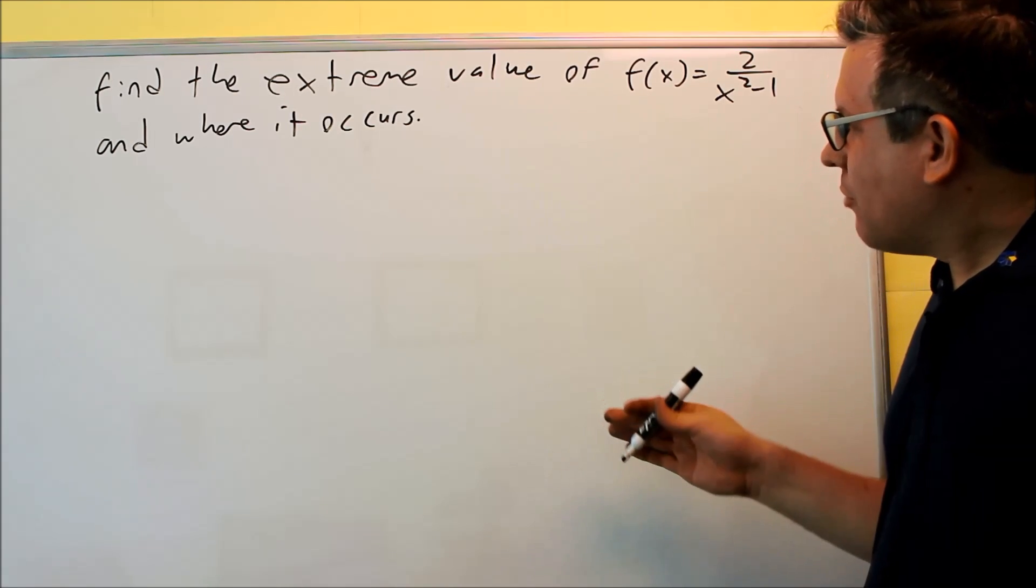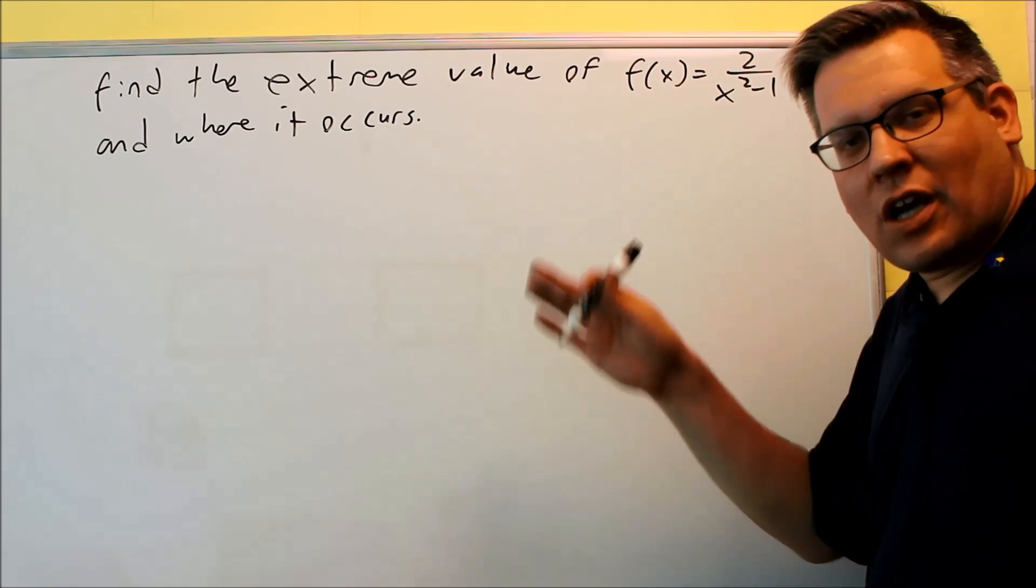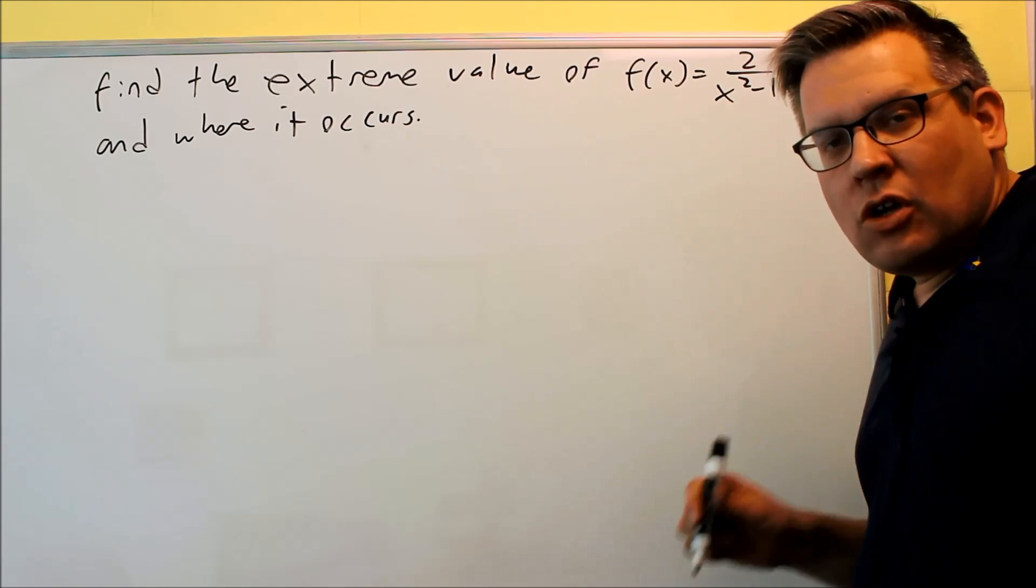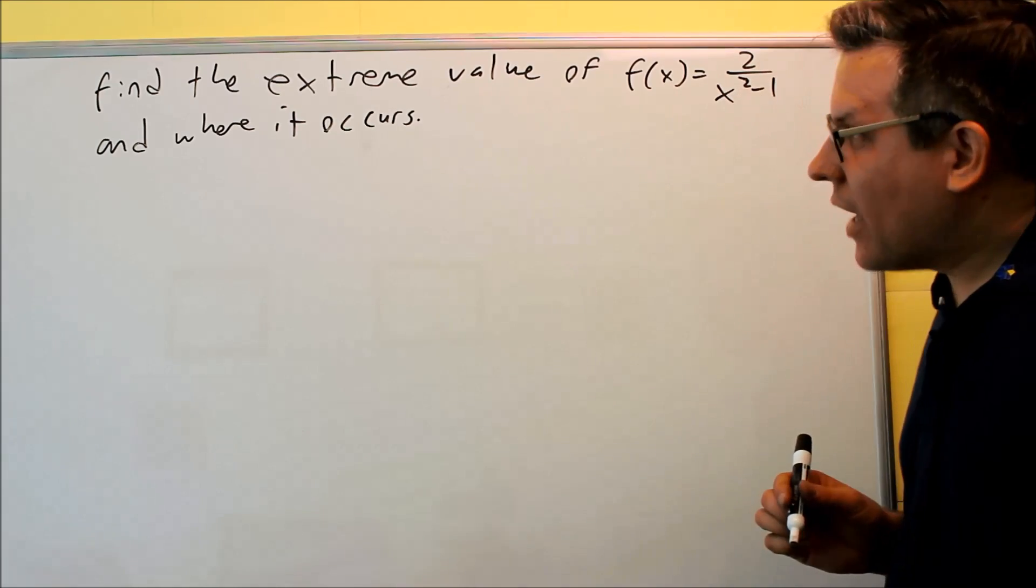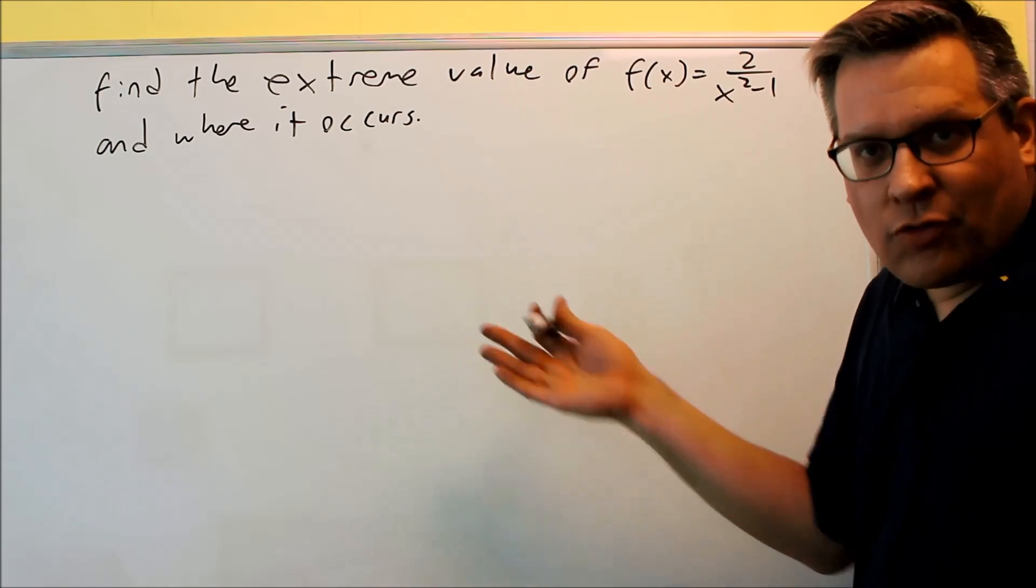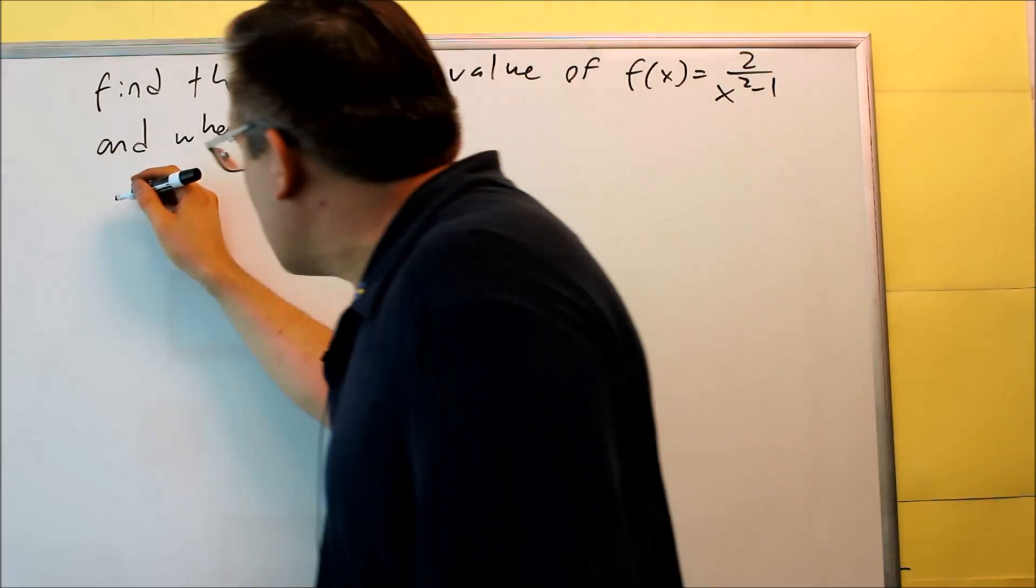So this time what we have to do is find the critical numbers and then we have to analyze the graph and see what the absolute highest and lowest points are going to be and if we have any relative minimum or max. First thing we do is always got to do a derivative for all these kind of problems no matter what, so let's start with that.